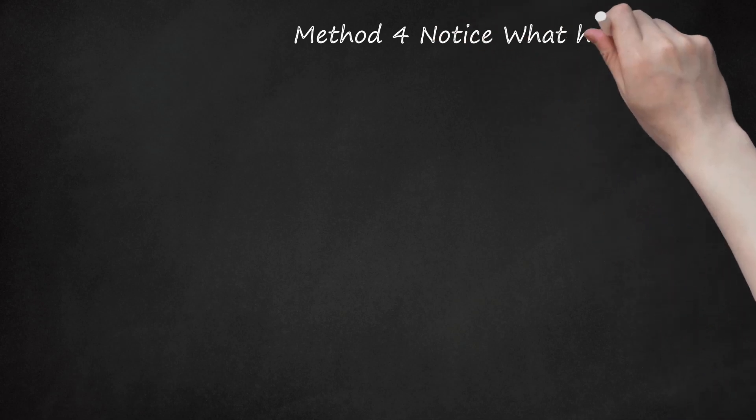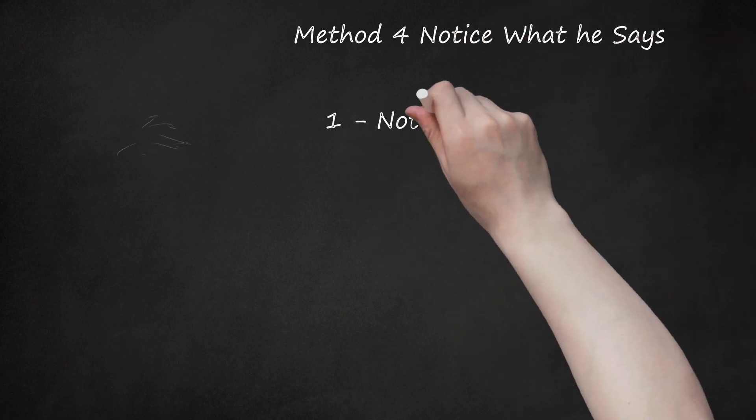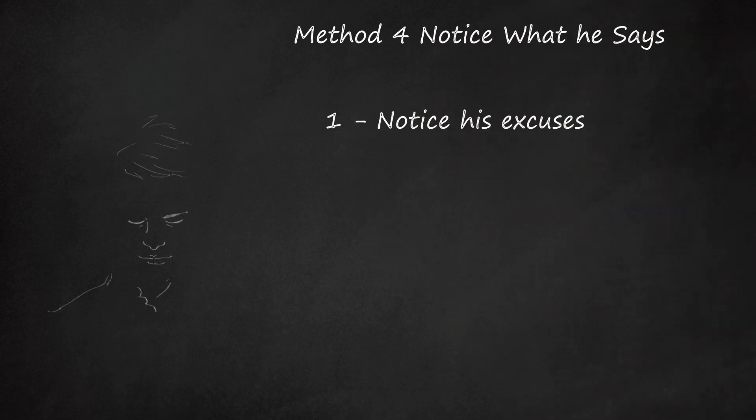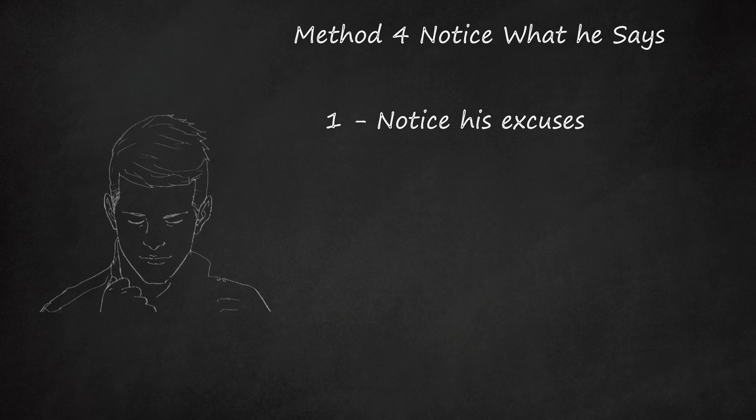Method 4: Notice what he says. Notice his excuses. Before, he always seemed ready to hang out, and now, his reasons for not being able to see you are piling up. At first, you believed him when he said he had a stomach ache or was too tired to go out, but you're starting to wonder if he's really trying to tell you that he doesn't want to spend time with you because he's busy hanging out with some other girl. Here are some signs that he may be cheating.